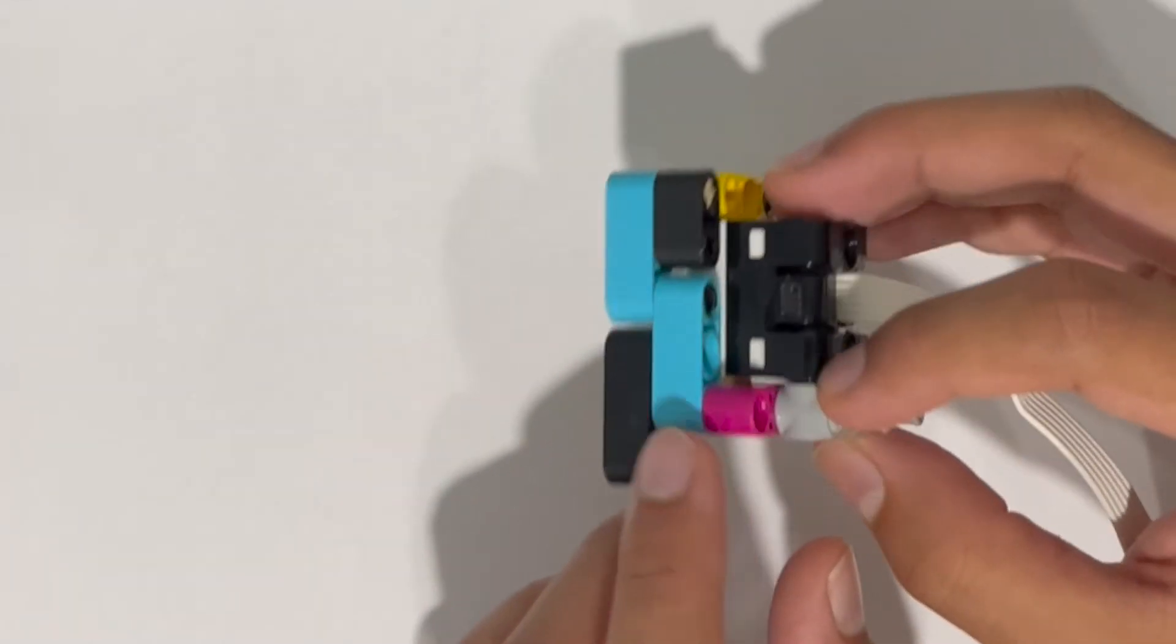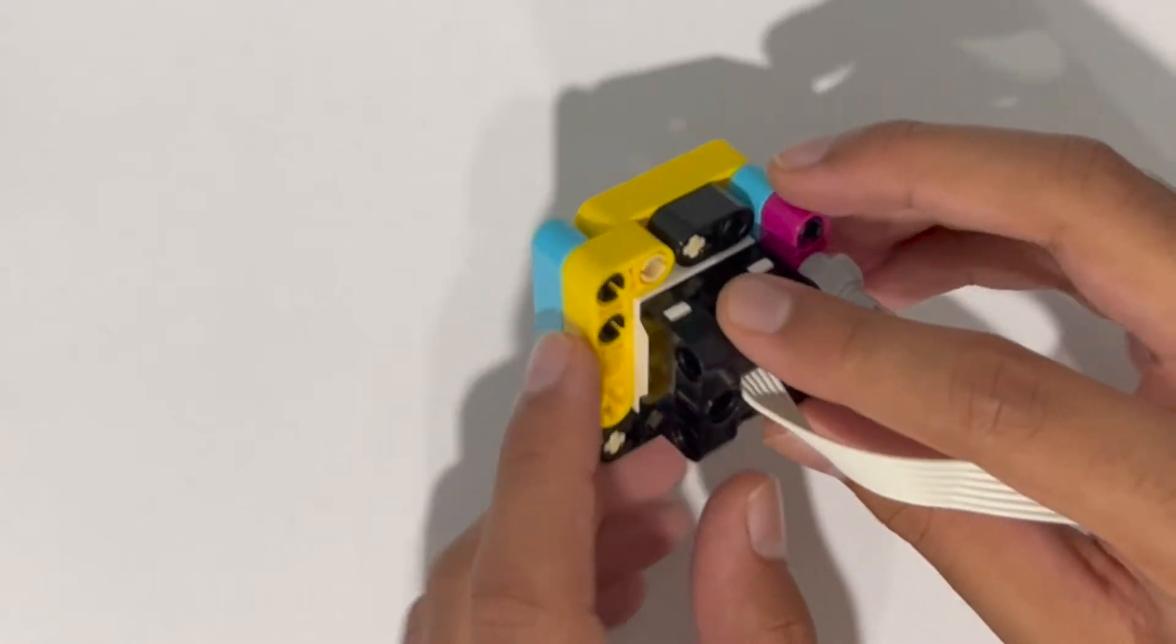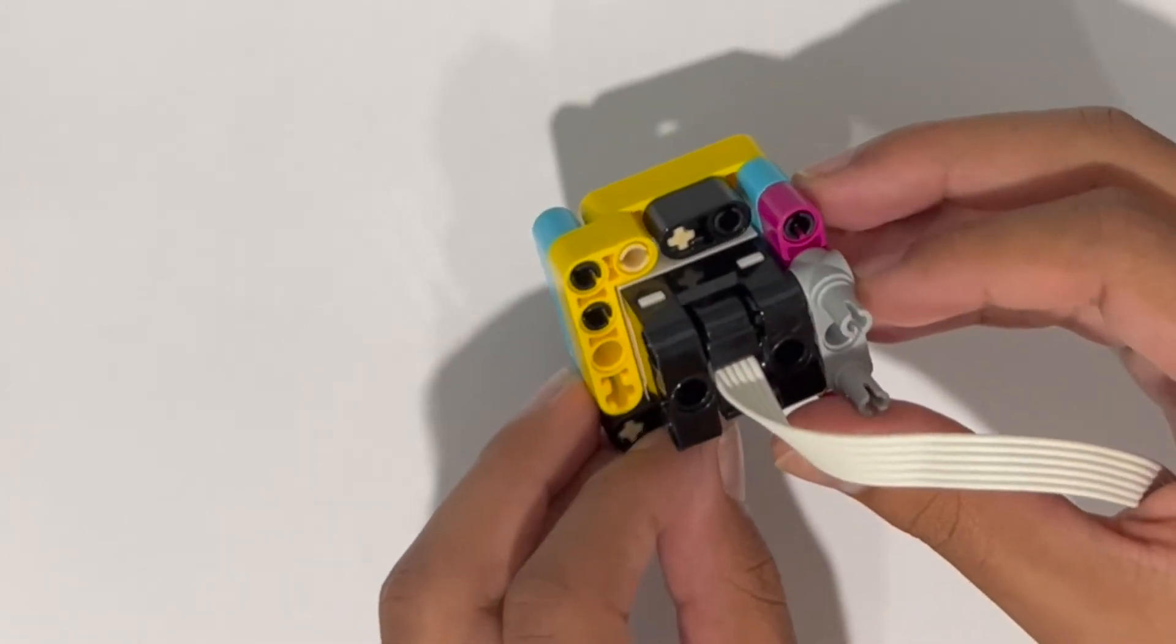So as you can see, what this color sensor shield does is it surrounds the sensor entirely. There's no gap on any side where light from the outside can get in.